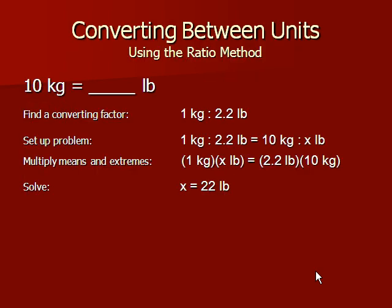First, let's show a calculation using the ratio method, sometimes referred to as the rainbow method. We want to calculate how many pounds are equivalent to 10 kilograms. First, find the known conversion factor — we know that 1 kilogram is equal to 2.2 pounds. Then set up a relationship between the known conversion factor and the unit you are changing. On the left-hand side of the equal sign, write the known conversion of 1 kilogram to 2.2 pounds, with kilograms first and pounds second. On the right-hand side, be sure the order of units is the same: 10 kilograms first, then x pounds second. Multiply the means (the inside numbers) and the extremes (the outside numbers), then solve for x.